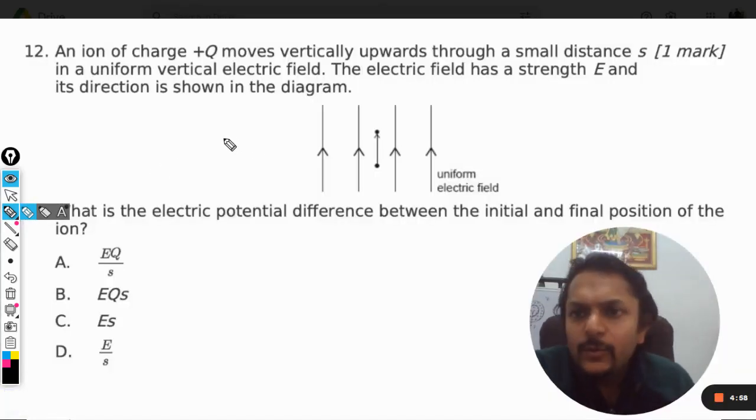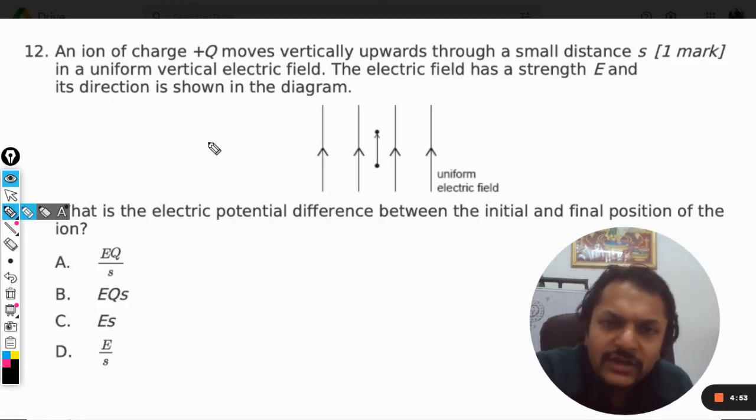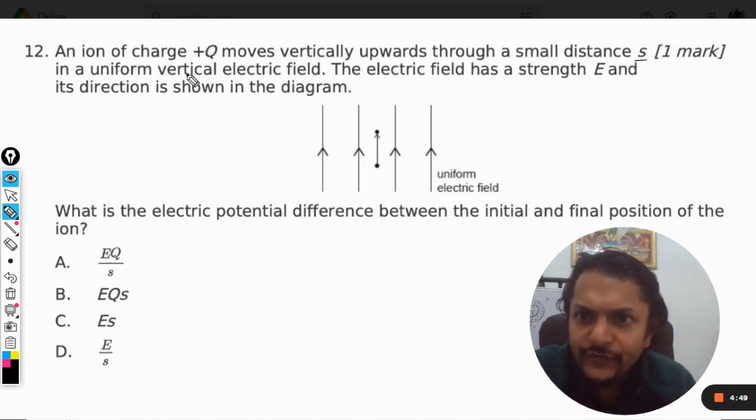Okay dear students, let us see what is there in this question. An ion of charge +Q moves vertically upwards through a distance of S in a uniform vertical electric field. The electric field has the strength capital E and its direction is shown.